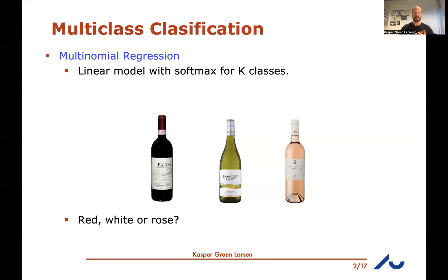In multinomial regression we're training a linear model and using the softmax to predict one among K classes. For instance, is the wine red, white, or rosé? The idea is we want to assign a probability to each of these classes as the output of a prediction.